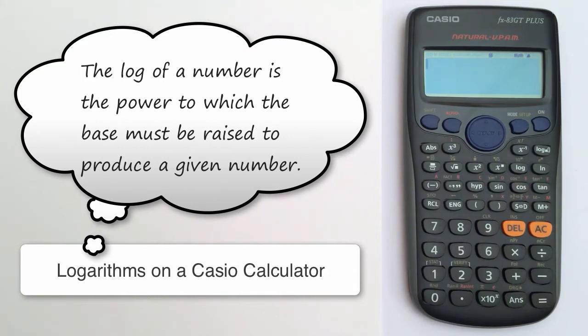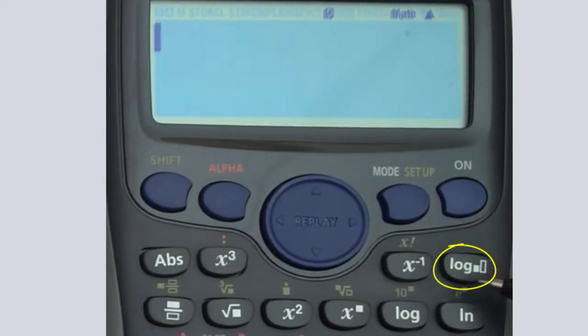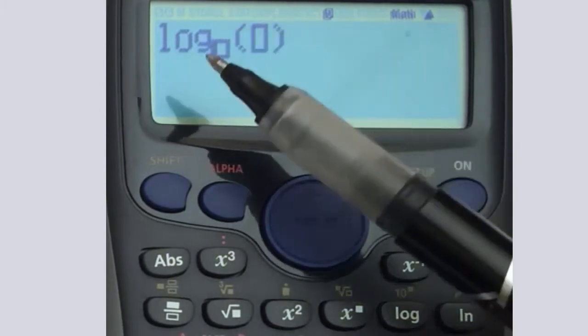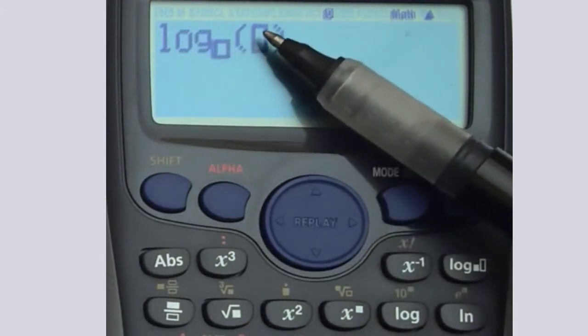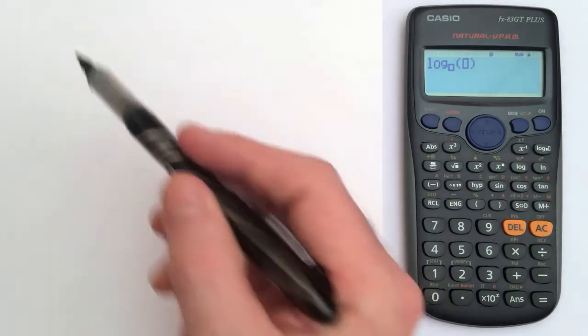A very useful button on this Casio calculator is the log function here. It allows me to get the log of any number to any base. I'm just going to press it here so it allows me to choose the base and choose the number.